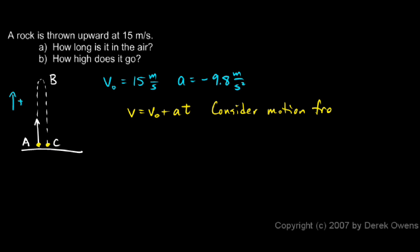Consider the motion from A to B, from point A up to the peak. And I do that, I think about point B up here, because I know something about point B. I know the velocity right at that point just for an instant is zero.